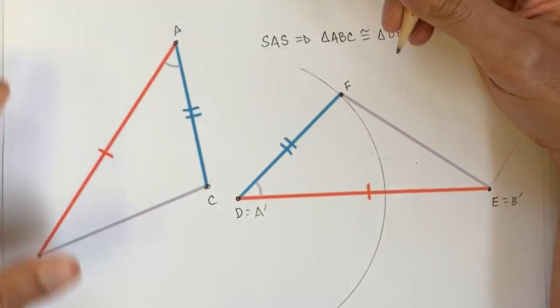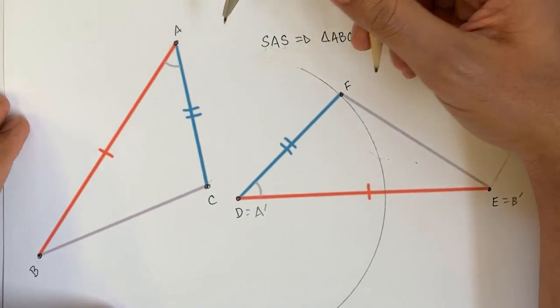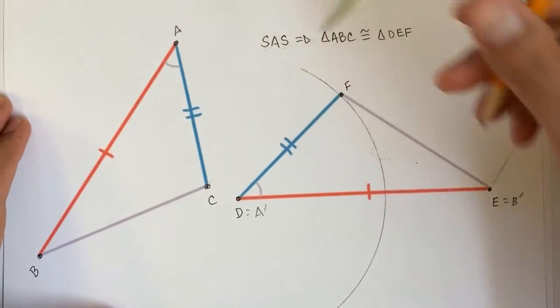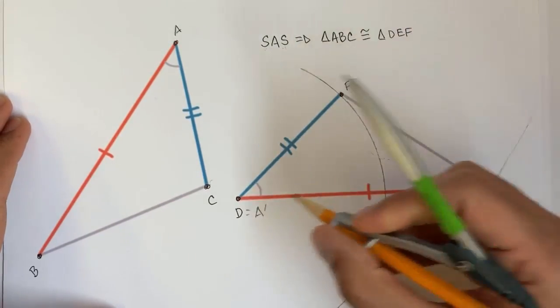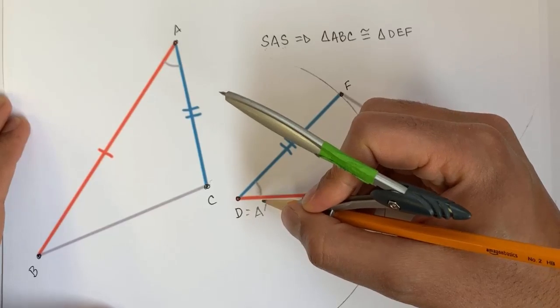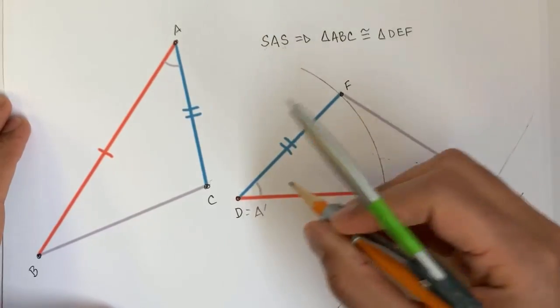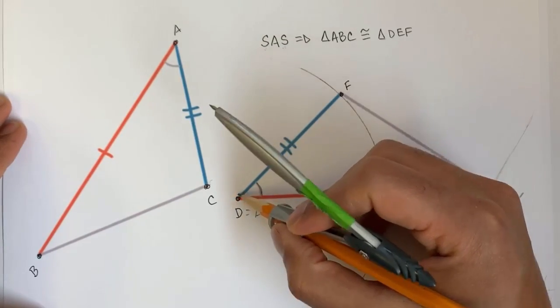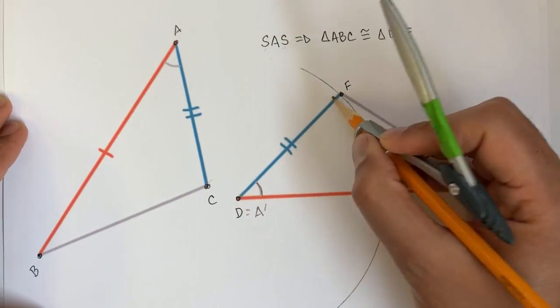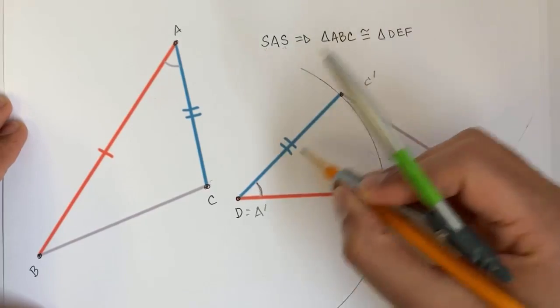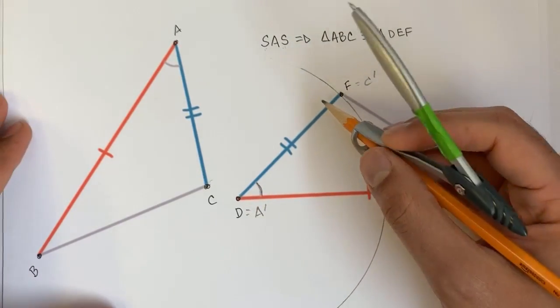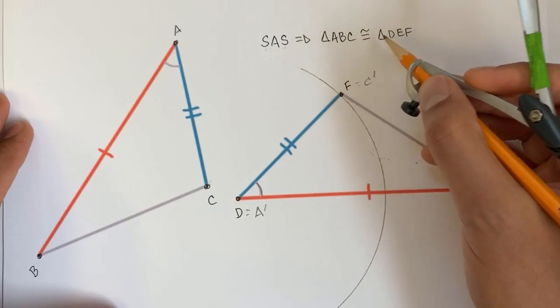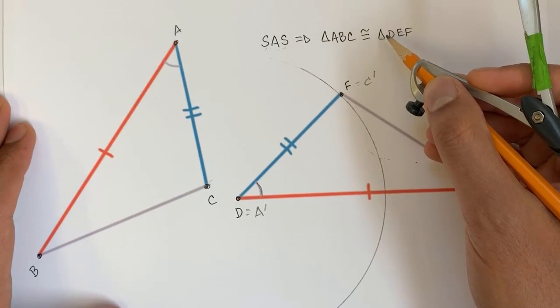We also know that the rigid transformations preserve angle measures, and so we also know that as we do the mapping, the angle will be preserved. So either side AC will be mapped to this side right over here, and if that's the case, then F would be equal to C prime, and we would have found our rigid transformation based on SAS. And so therefore, the two triangles would be congruent.